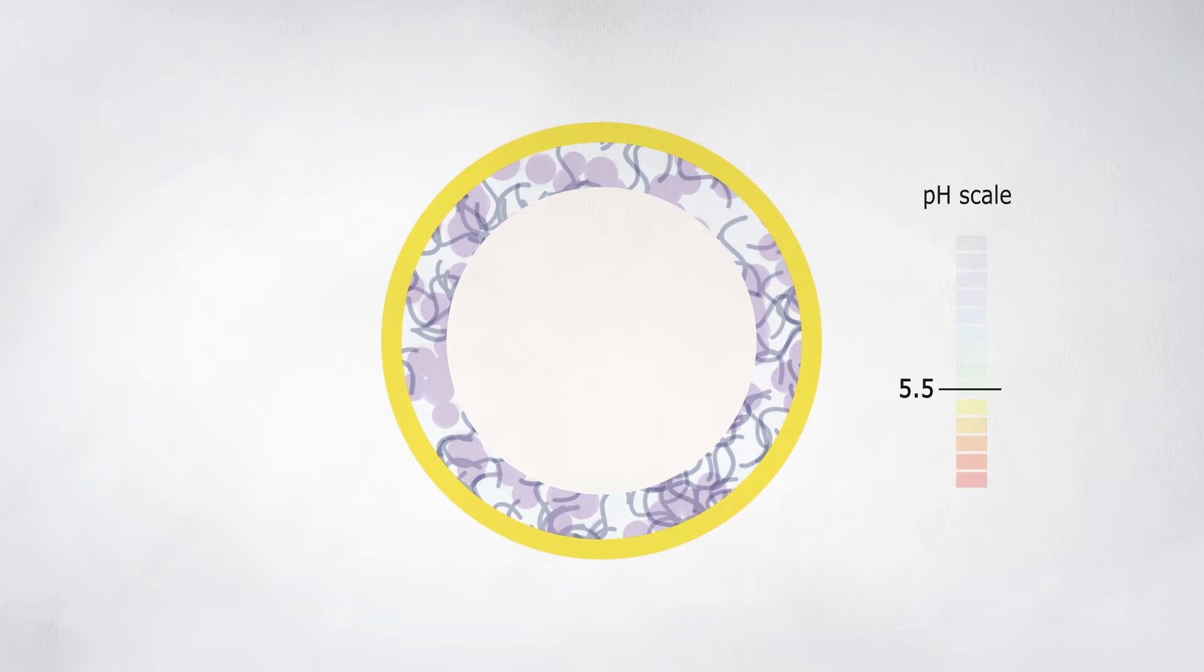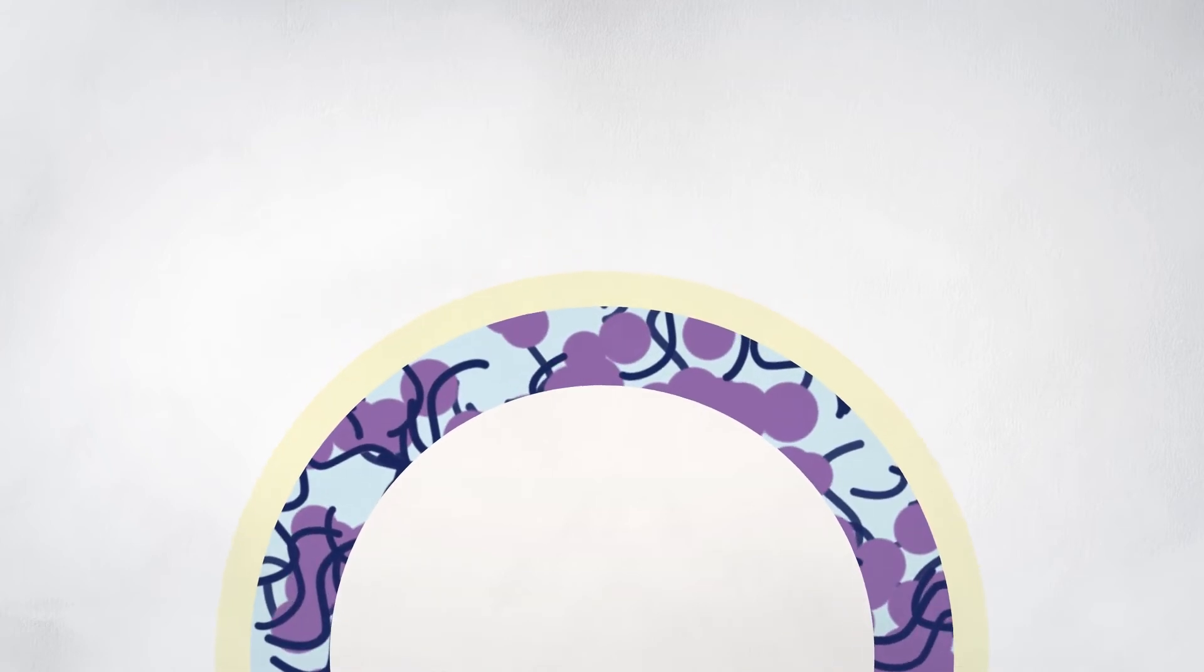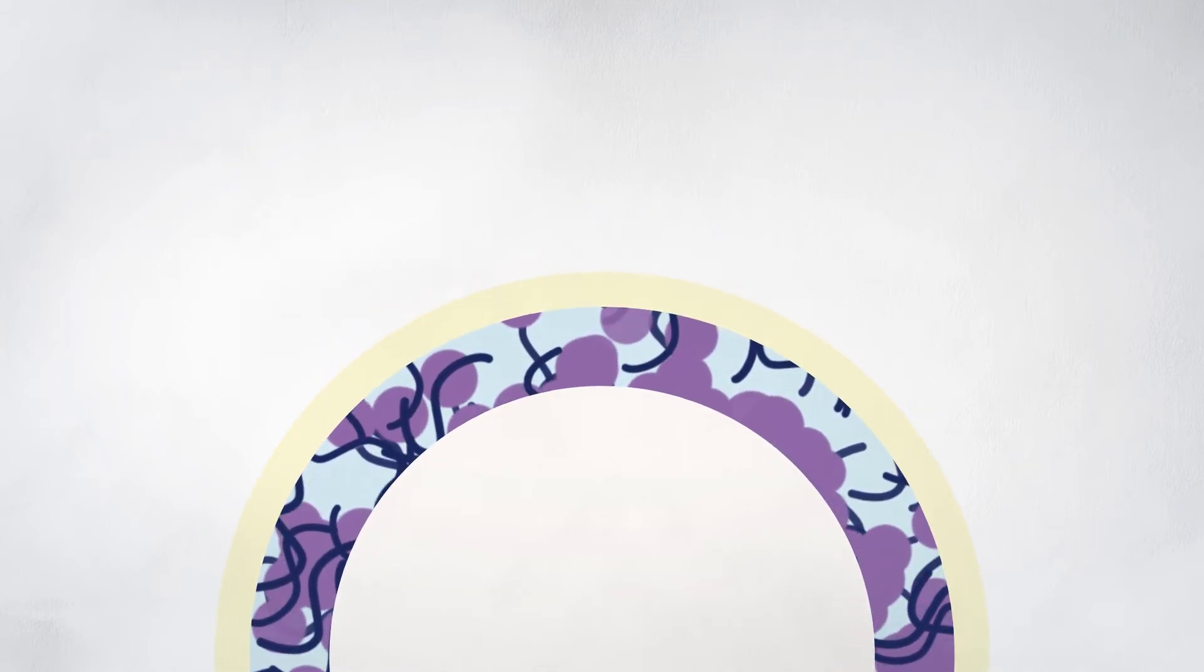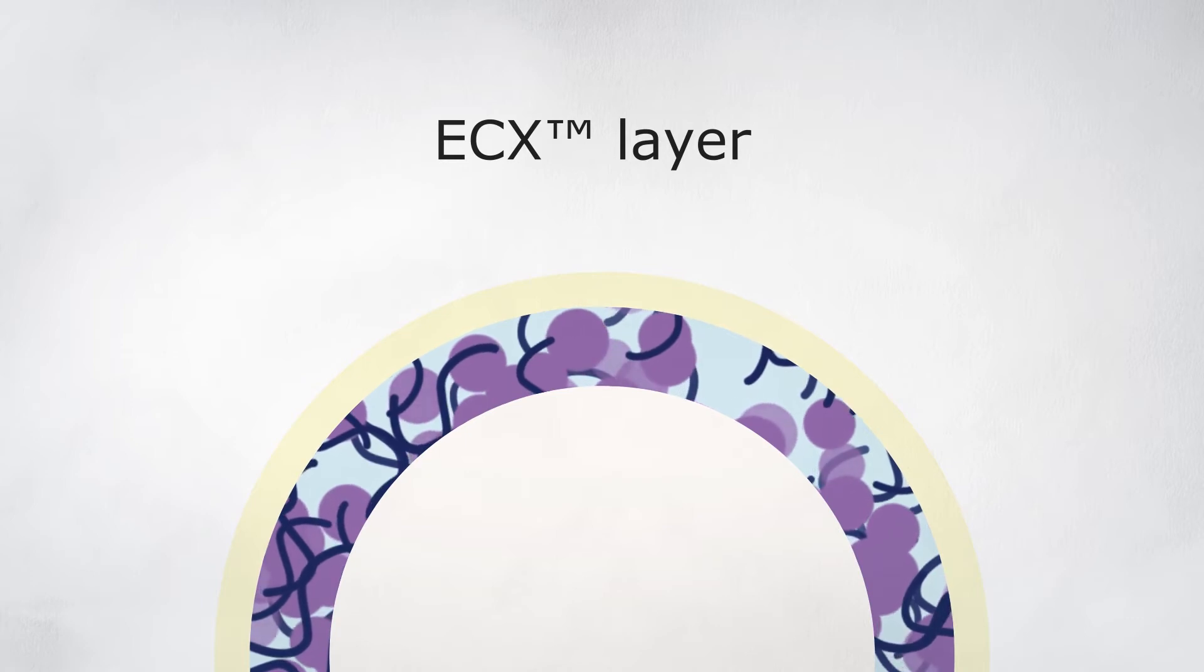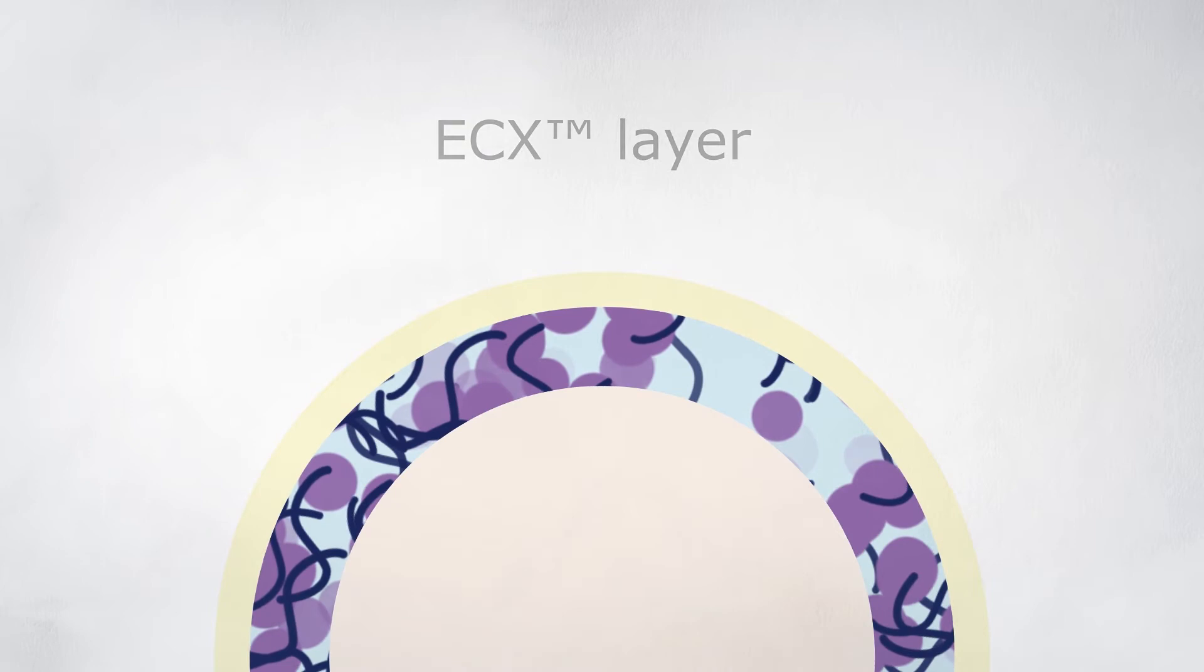Underneath the enteric coating, the active ingredient is embedded in an ethyl cellulose matrix, the ECX layer. This technology is designed to ensure a gradual, time-dependent controlled release of the active ingredient from the pellets.